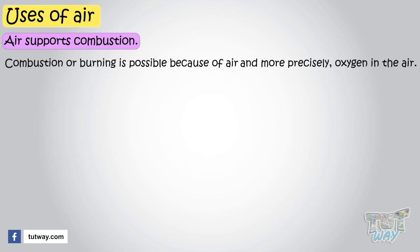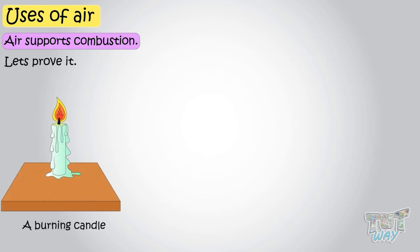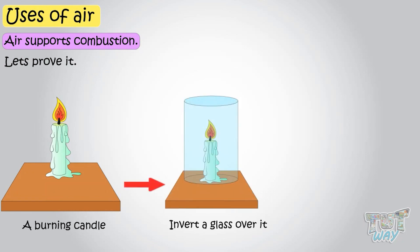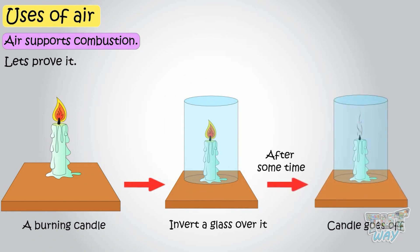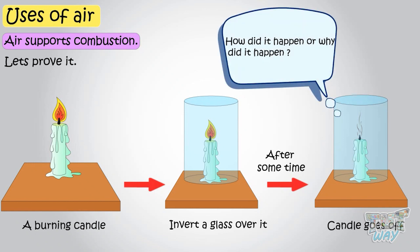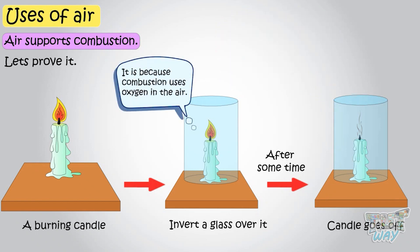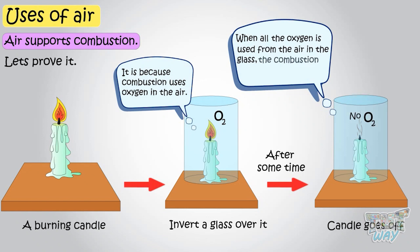Let's see an activity to prove it. Take a burning candle and now invert a glass over it and observe what happens. After some time, the candle will go off on its own. How did it happen or why did it happen so? It is because the combustion uses oxygen in the air and when all oxygen is used from the air in the glass, the combustion stops by its own, as there is no oxygen left in the glass.